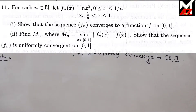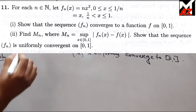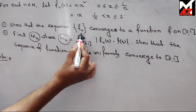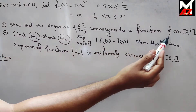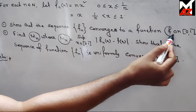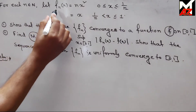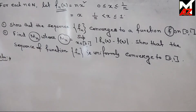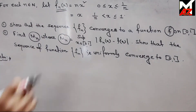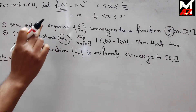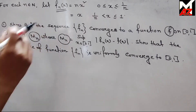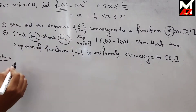Now the solution. To show that the function f_n converges to the function f — called the limit function — we first find the limit function of the given sequence of functions f_n(x).